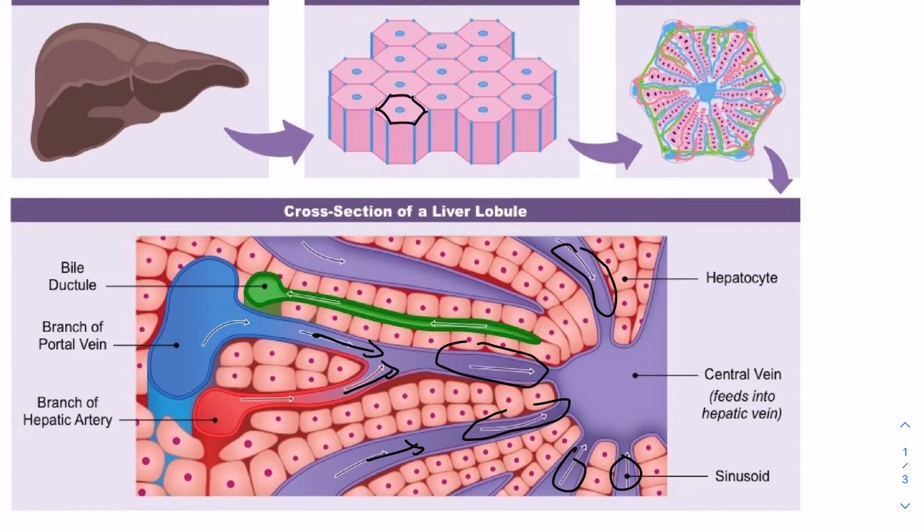So, for example, if we haven't eaten in a while, the glucose concentration of the blood coming in from the portal vein is actually going to be very low. Thus, stored glycogen in the hepatocytes will be converted into glucose and move into the bloodstream. And this process is regulated by the hormone glucagon released by the alpha cells in the pancreas.